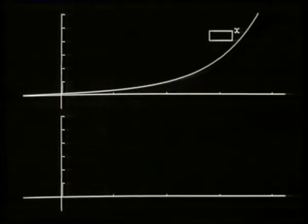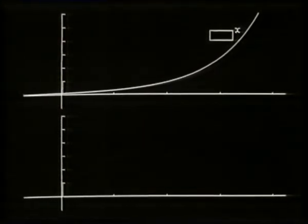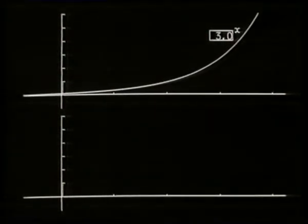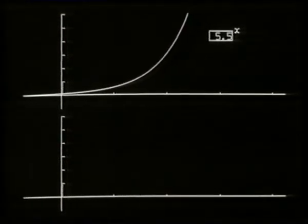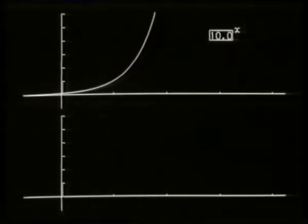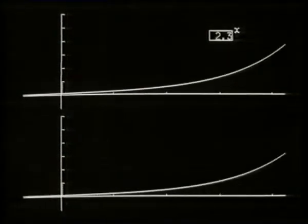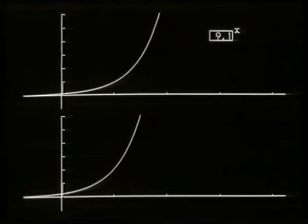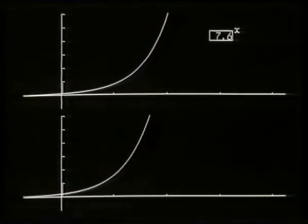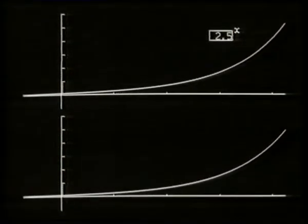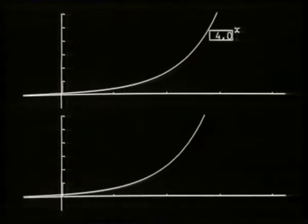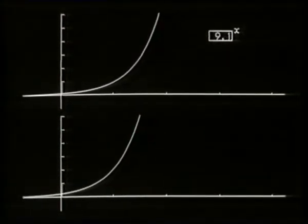Now let's look at the general function y equals a to the x and see what happens as we change a. As we increase a, the curve gets steeper; as we decrease a, the curve flattens. What happens to the derived functions? With a equals 1.6, as we increase a, sometimes the derived function is steeper than a to the x and sometimes it's flatter — it all depends on a.